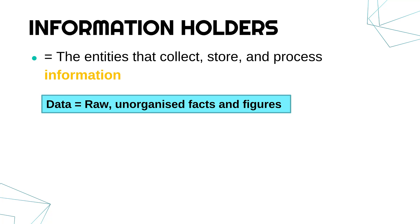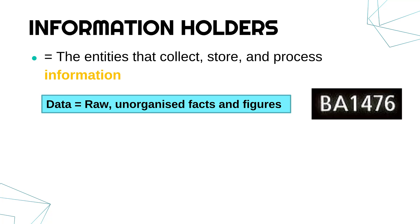Data is defined as raw, unorganised facts and figures. For example, if I just showed you this grainy image of two letters and four numbers, that might be data. It's raw, it hasn't been processed, it's not organised — it's just a fact on your screen. You might be able to guess what it is, but maybe you don't know for sure.